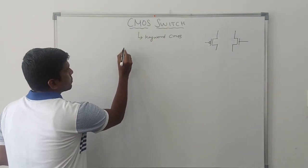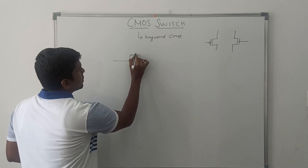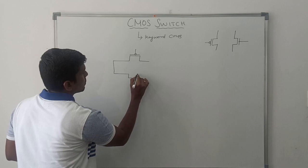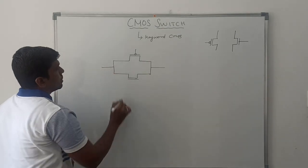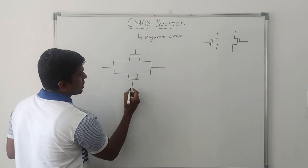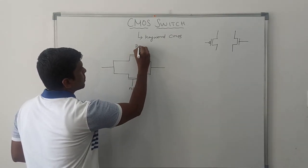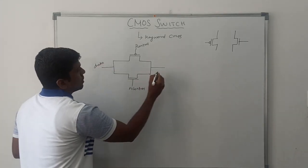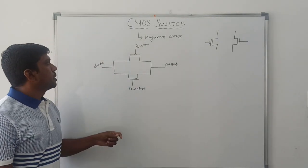Now I draw the structure of CMOS switch. It has two transistors, PMOS and NMOS. It's a simple structure with four terminals. These two terminals act as control signals, namely called N control and P control. This one is input data, and this one is output.